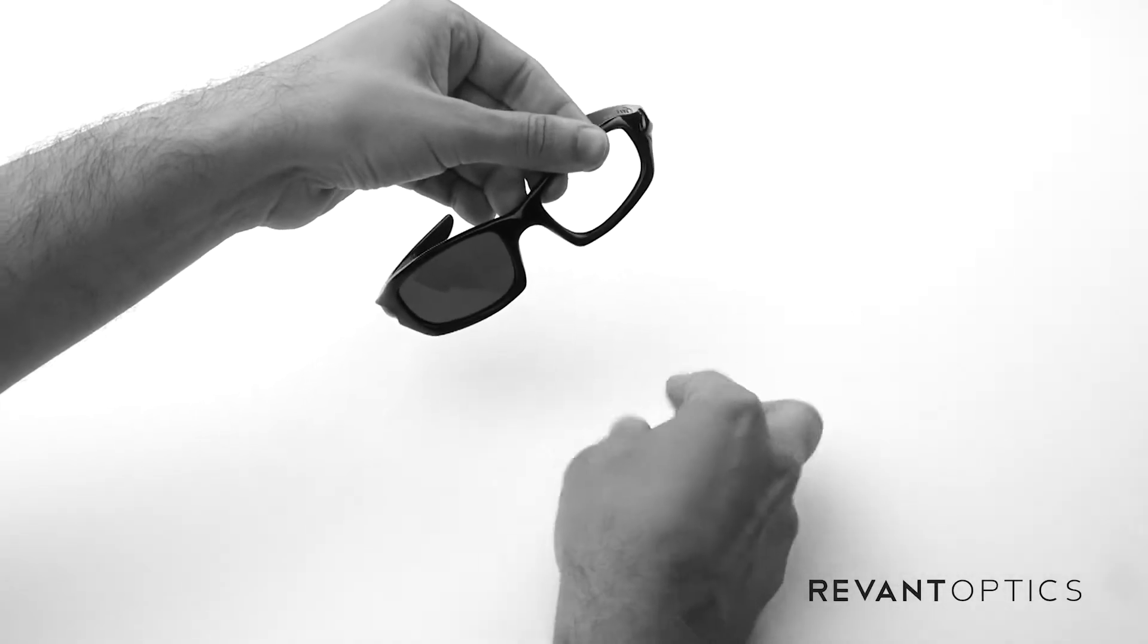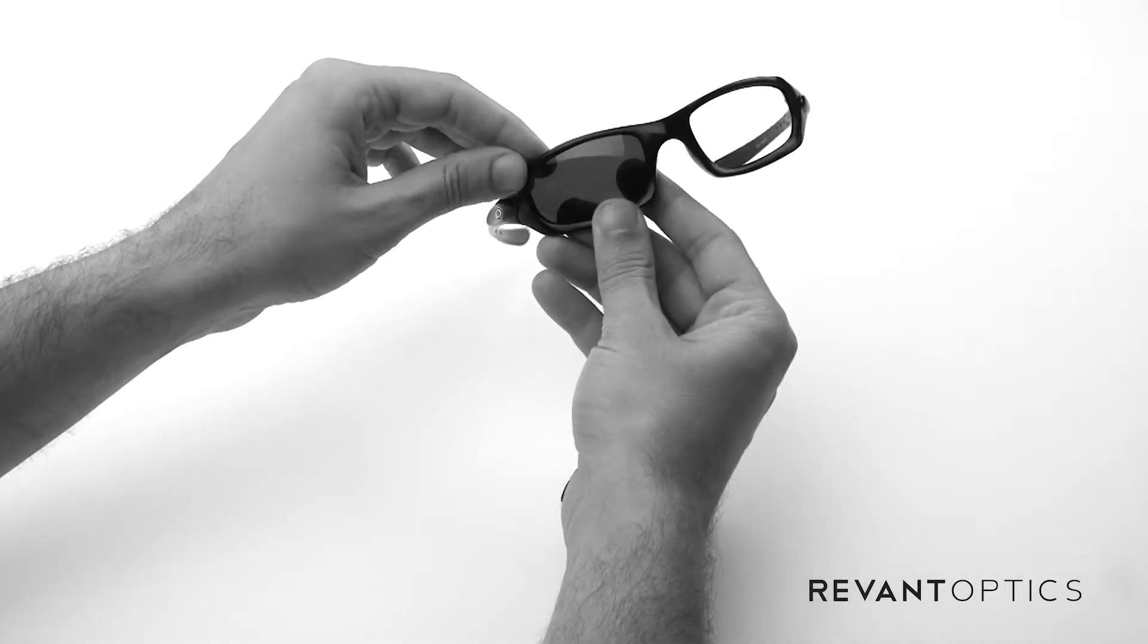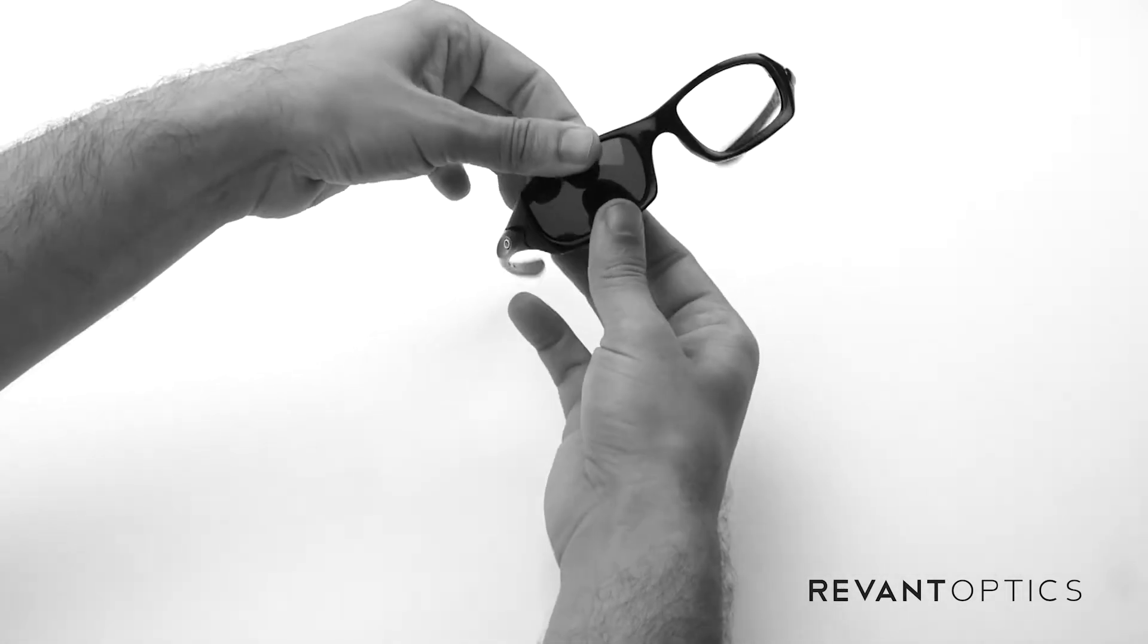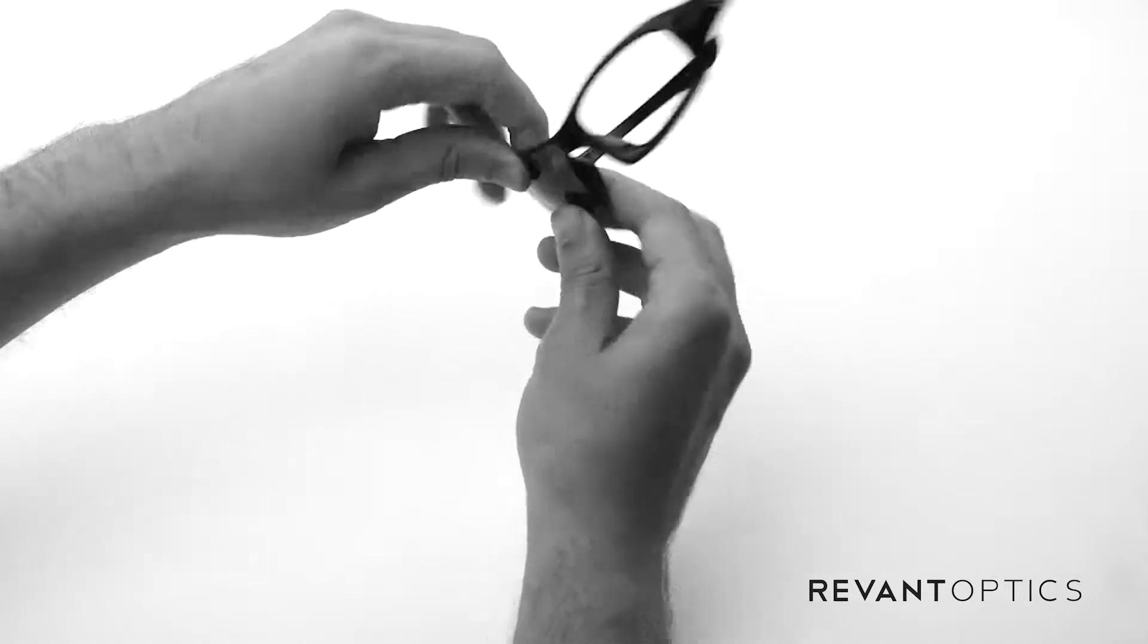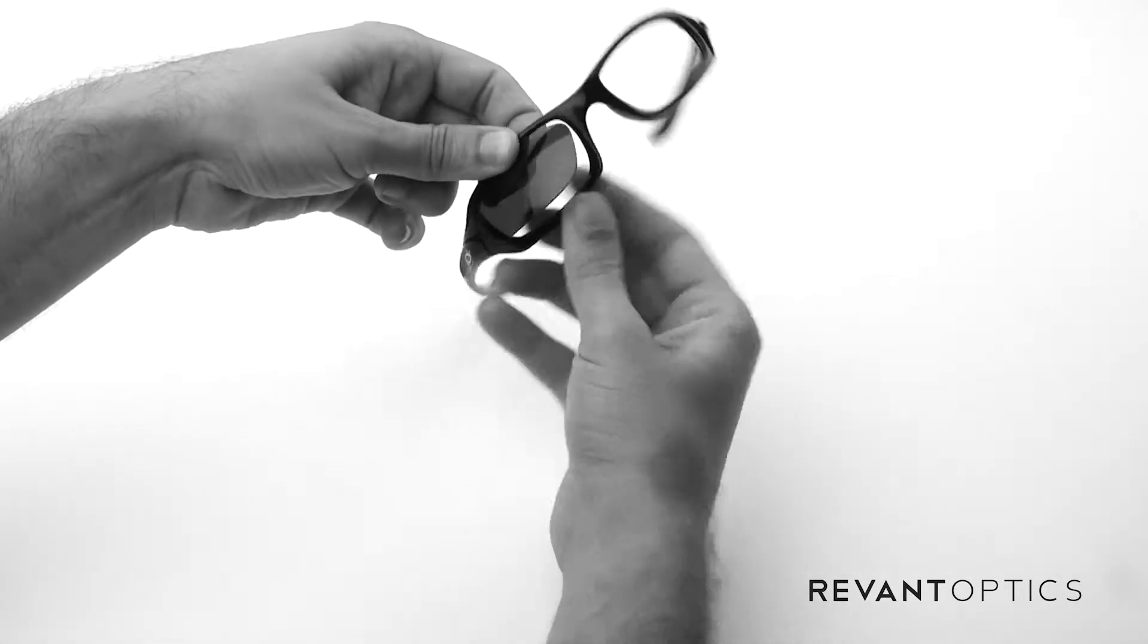So it's that easy. Just pop it right out and then we'll show you on this side as well. Pull up here, pull down on here, and push through the back side of the lens with your finger. It pops right out.